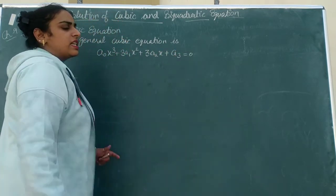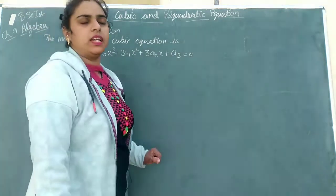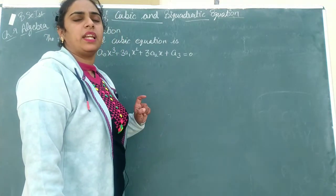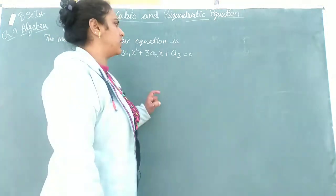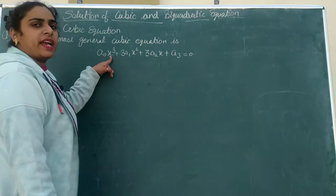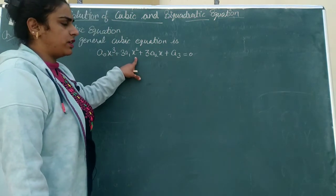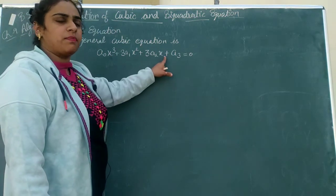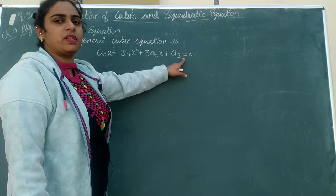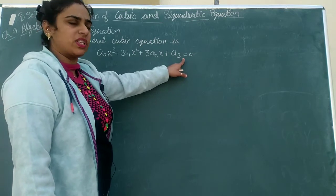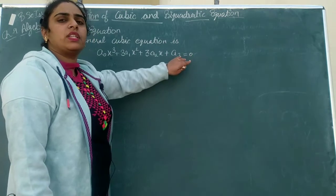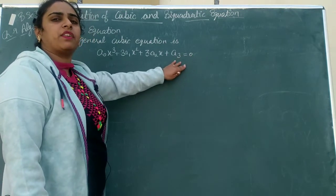As discussed in the last video about complete and incomplete equations, this is a complete cubic equation — it contains x³, x², x¹, and the constant term (x⁰), all equal to zero.